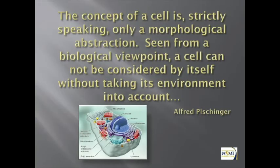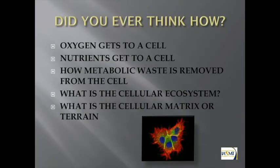When we talk about cells, the concept of cell — we think of morphological abstraction. But cells, from a biologic point of view, are really a reflection of the ecology that they live in. In a healthy, functional ecology, they're functioning, doing well, they have their structure, they have their skeleton. What does that environment really mean? How does oxygen get to a cell? How does a nutrient get to a cell? How does metabolic waste get out of the cell? What is the cellular ecosystem and cellular matrix or terrain? This is the essence of biology — the unifying component of biology in the human body.